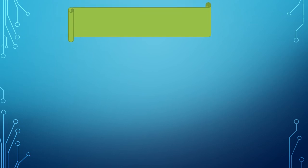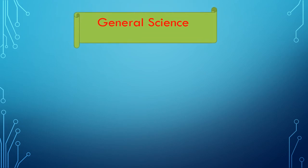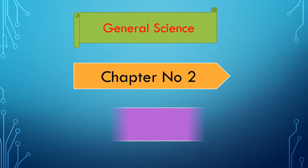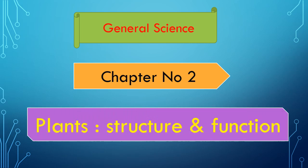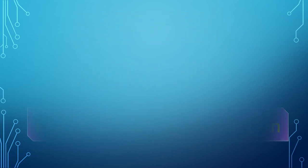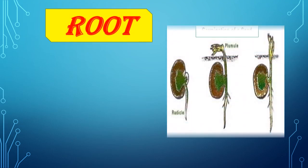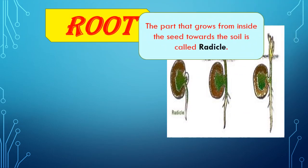Today we are going to learn about the subject General Science, Standard 7, Chapter Number 2, that is Plants Structure and Function. The first topic of this chapter is root.